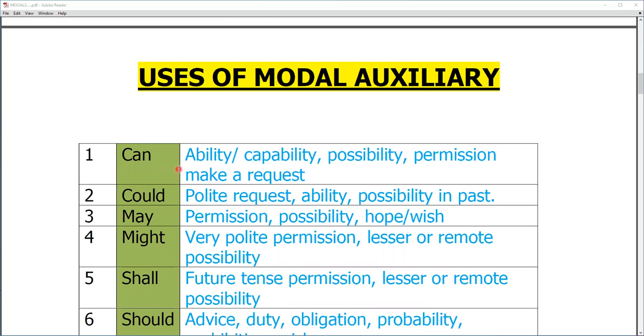First is can and is used for ability, capability, possibility, permission, make a request. If we have any ability or capability, we will use can over there. Possibility, permission, and request, we have to use can.